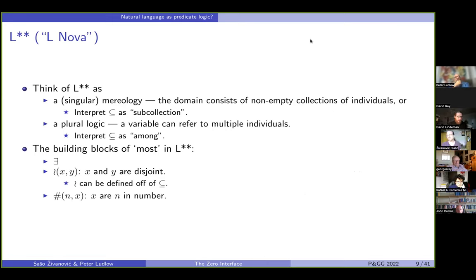And you can think of it either as a mereological theory or you can think of it as a plural logic. This is actually what we prefer. So the logic where a variable can refer to more than one individual. And let me show you how we do most in this language. So we are not seeing most as an undecomposable primitive, but rather we will build it from different pieces of the syntax of formal language.